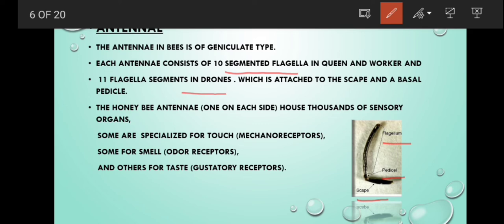The honeybee antenna hosts thousands of sensory organs. Some are specialized for touch, those are called mechanoreceptors. And for smell, those are called odor receptors. And for taste, those are called gustatory receptors.